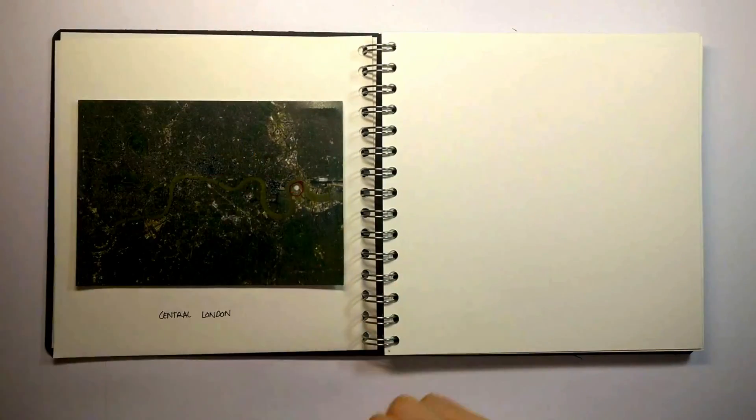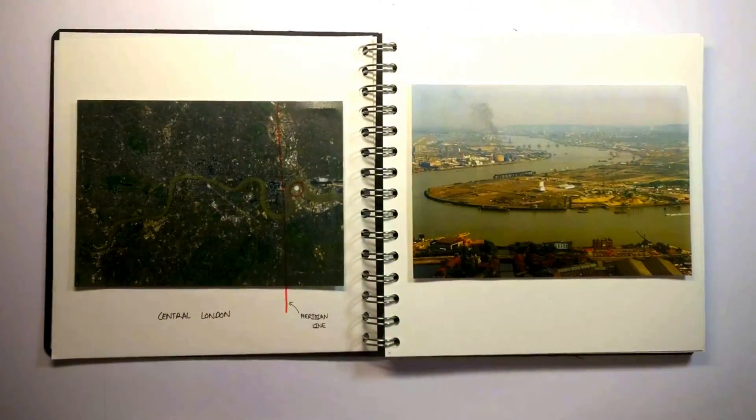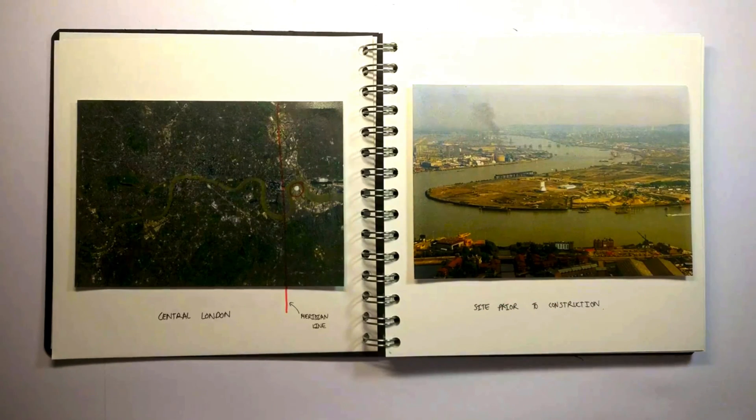Situated on a disused gasworks on the Greenwich Peninsula, close to the Meridian Line, the Millennium Commission set out a tender to design a large, open-plan and easily buildable structure in which to house such an exhibition.